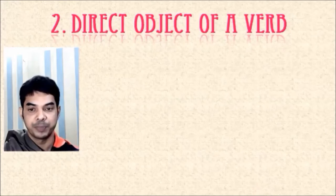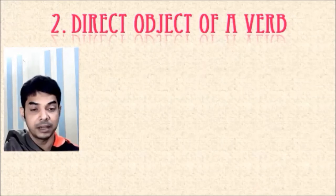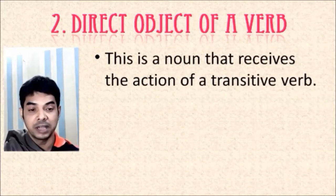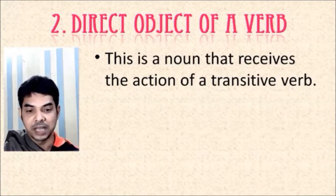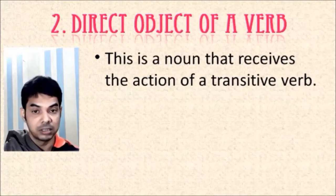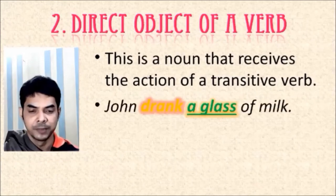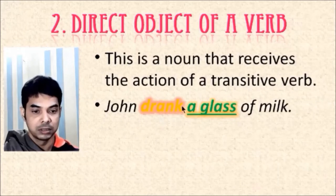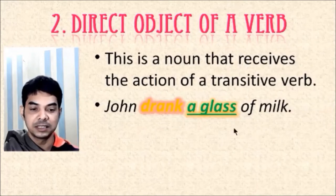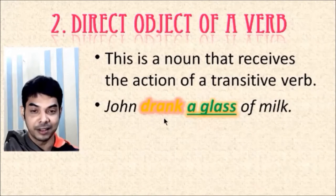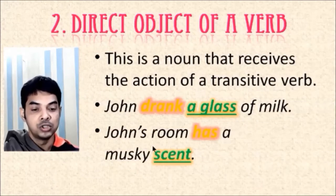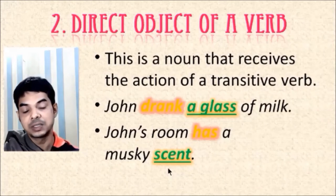Here comes the third rule: direct object of a verb. A noun can be used as the direct object of a verb — obviously for a transitive verb — and the noun receives the action of the transitive verb. Example: 'John drank a glass of milk.' Drank what? A glass of milk. This is the transitive verb, which accepts an object, and 'a glass of milk' is the direct object, found by asking the verb with 'what.' Similarly, 'John's room has a musky scent.' Has what? A musky scent. So here also a noun is used as the direct object of a verb.